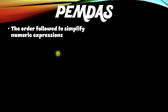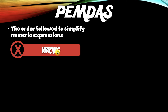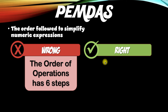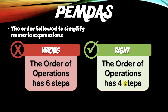When it comes to the order of operations, there's a big mistake that students make. Because they see that there are six letters in PEMDAS, students tend to think that there are six steps in the order of operations. But that is totally wrong. Actually, the order of operations only has four steps.